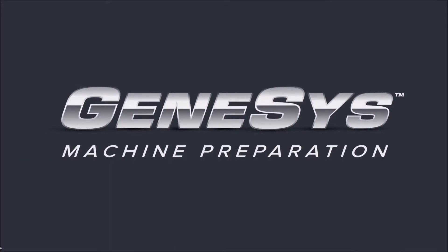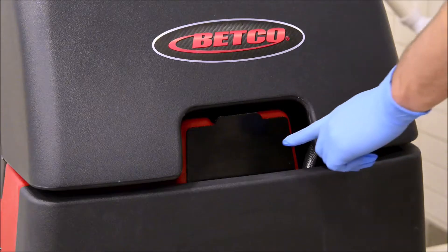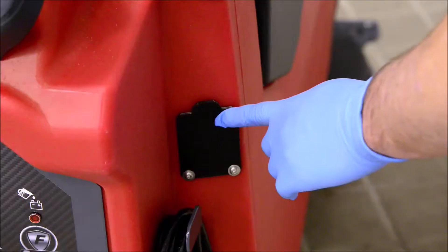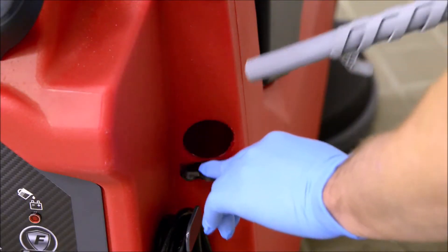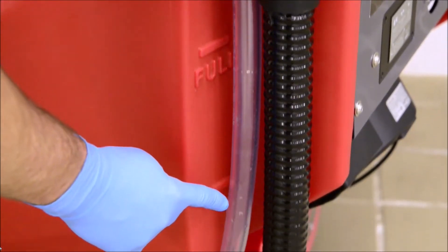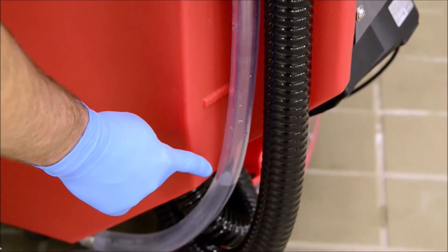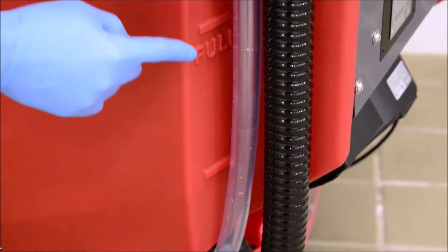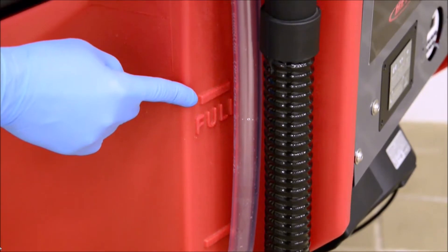Let's get started with section 1, machine preparation. The first step is to fill the Genesis scrubber's 25-gallon solution tank. Fill ports are in both the front and the rear of the machine. While filling, you can check the solution level by utilizing the solution sight gauge on the rear left side of the machine. The marks on the tank indicate how full the solution tank is with cleaning solution.